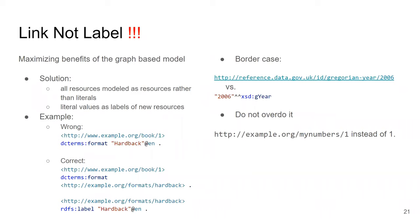There is also a border case: the British service gives you an IRI for each year. When you want to represent a year, you can either link to the British service or use a literal of the proper data type — xsd:gYear. It depends on the use case whether you want to use external service data or not. There is no clear winner; both approaches are correct in some ways.